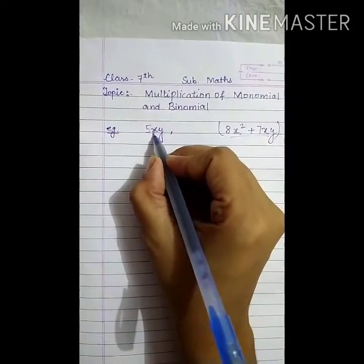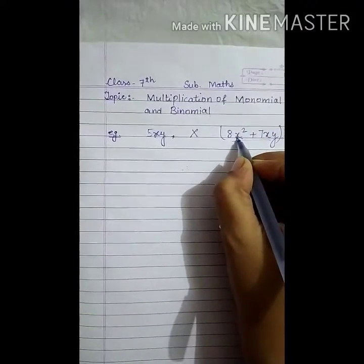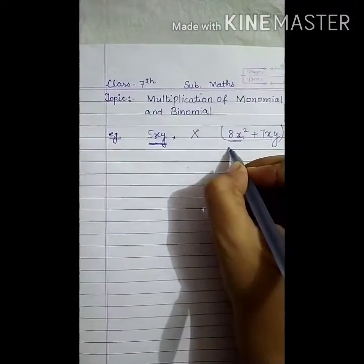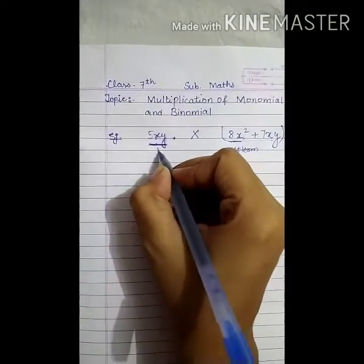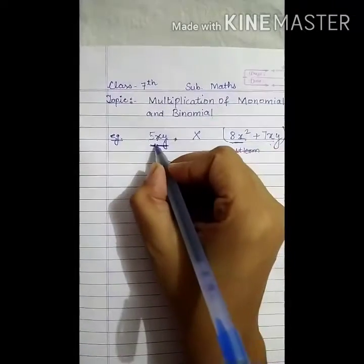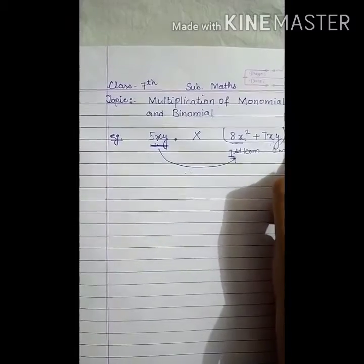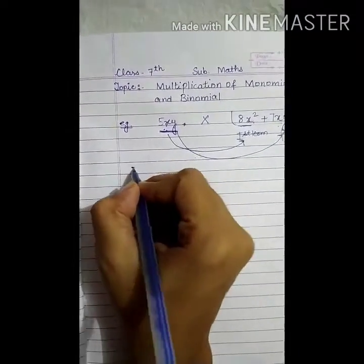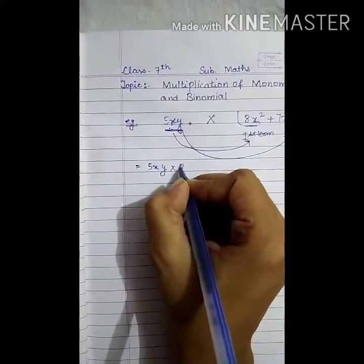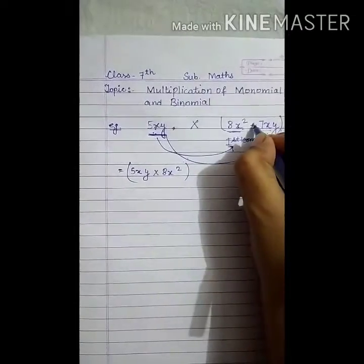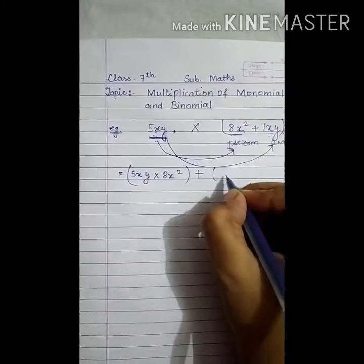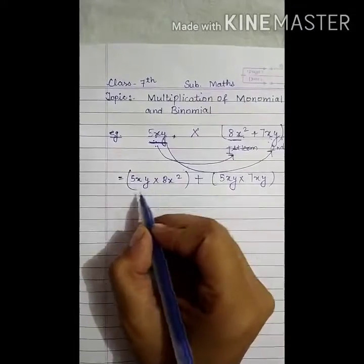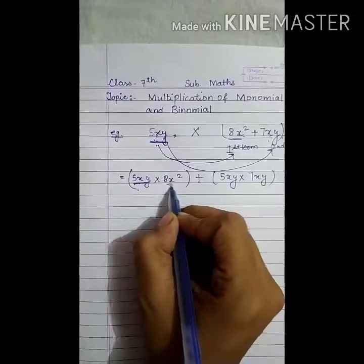Now we have to multiply 5xy by this binomial. The method is: first we multiply the monomial by the first term, then we multiply the same monomial by the second term. So first is 5xy multiplied by 8x squared, then plus 5xy multiplied by 7xy. In worksheet 1 you learned how to multiply a monomial by a monomial.